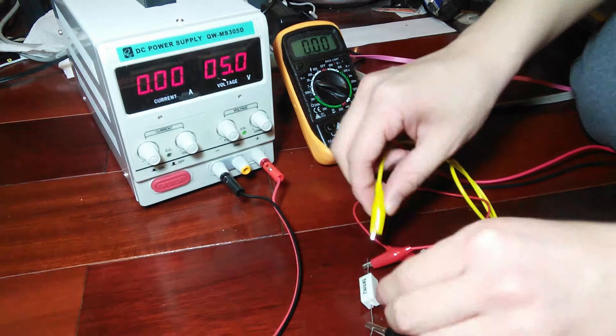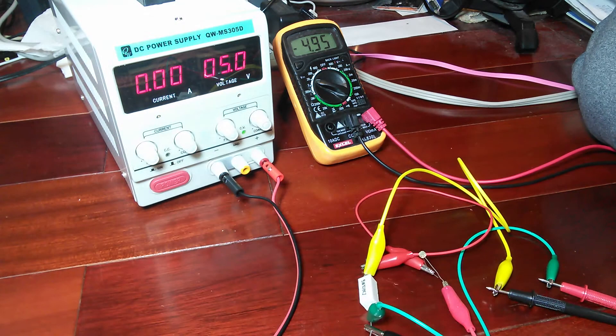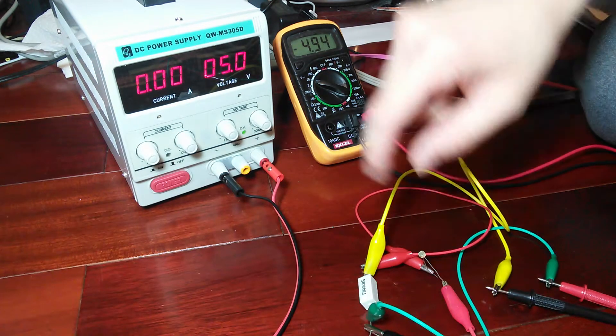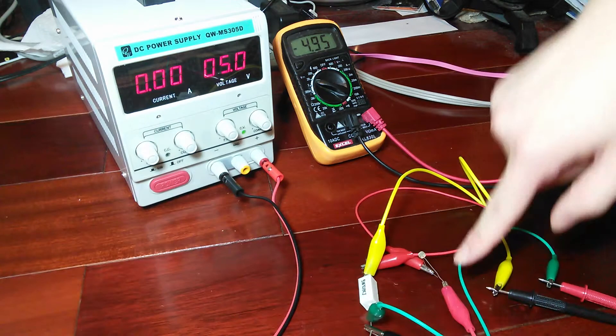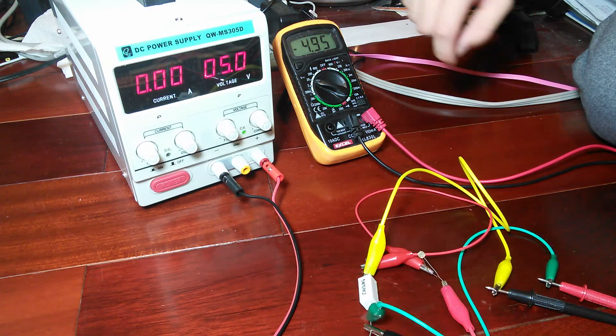So, let's see what happens when we hook the probes up to the constant resistor. Now, you'll notice that together, they drop 5 volts. This resistor is measuring about 4.95 volts.